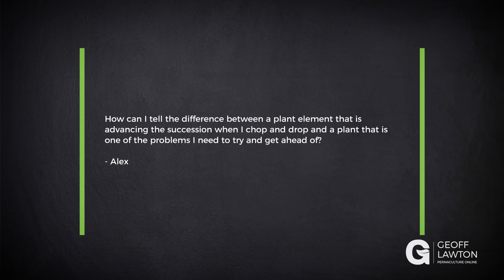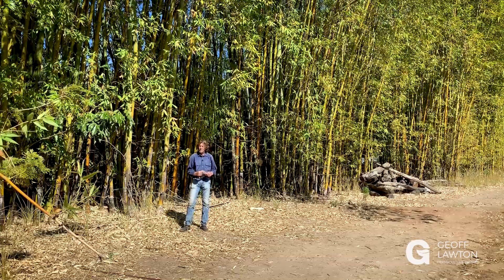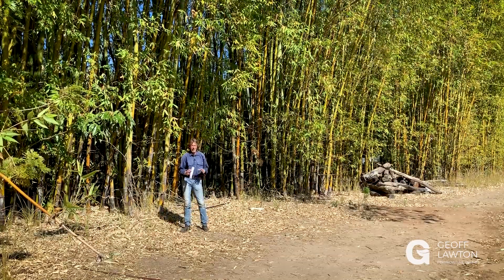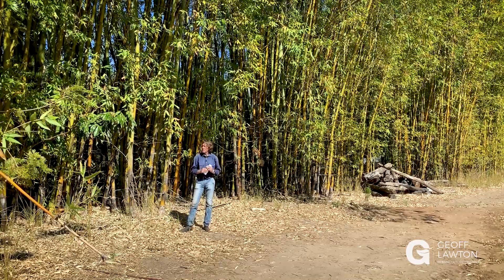Alex has a question: how can I tell the difference between a plant element that is advancing the succession when I chop and drop, and a plant that is one of the problems I need to try and get ahead of? Well, there are different ways of looking at this and I'm going to have to give you two different examples.